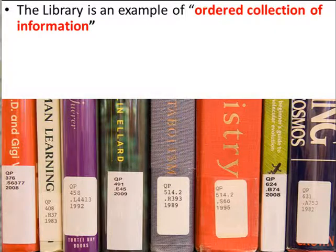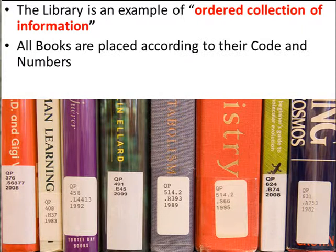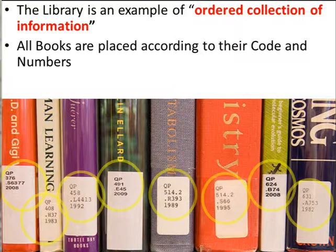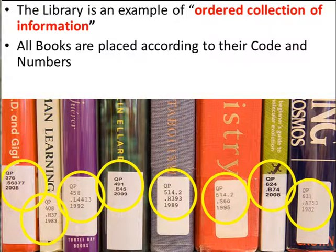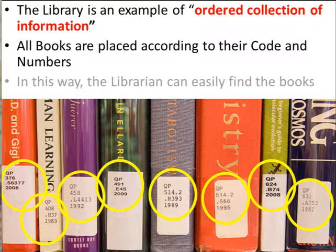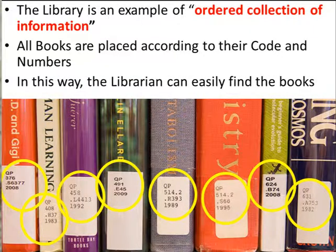The library is an example of an organised collection of information. The books are placed according to their codes and numbers, so that the people who visit the library can search for the books easily on the shelves, and the librarian can easily find the books.